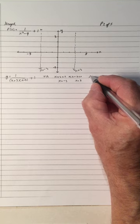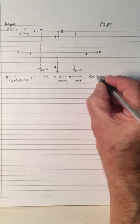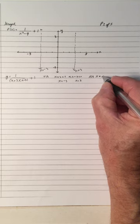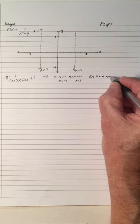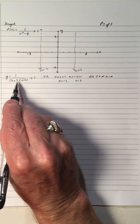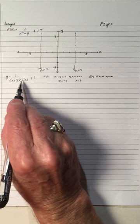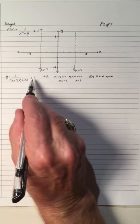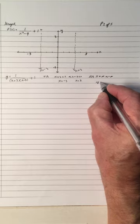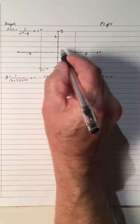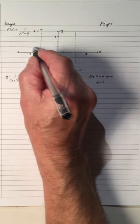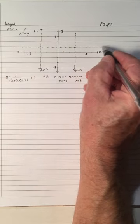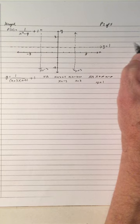Now let's look at the horizontal asymptote. The horizontal asymptote is found as x approaches infinity or negative infinity. As x approaches infinity, the denominator becomes very, very large, so this fraction approaches 0, which means y will approach 1. So the horizontal asymptote is y equals 1. I'll draw the vertical asymptotes and mark y equals 1.